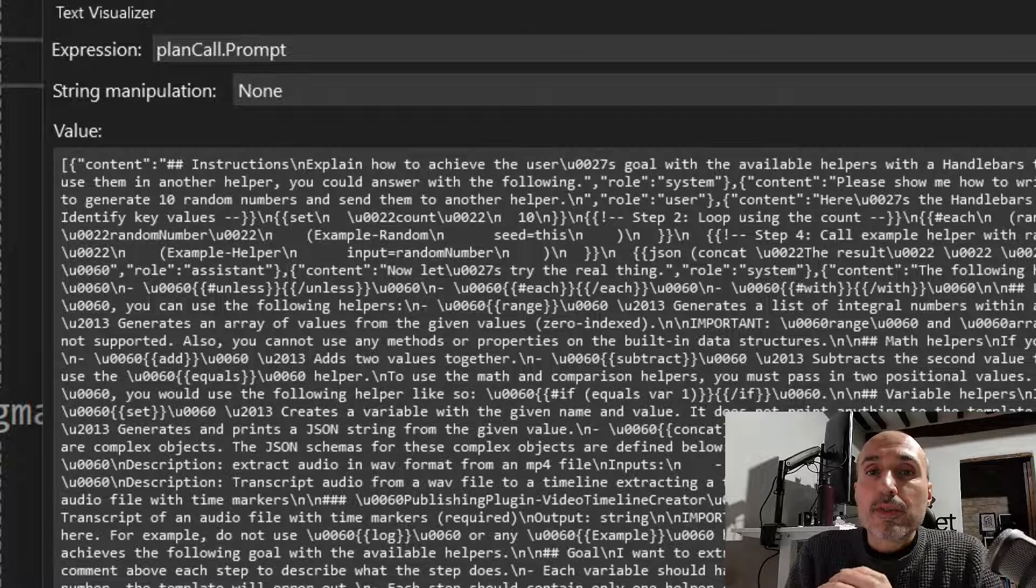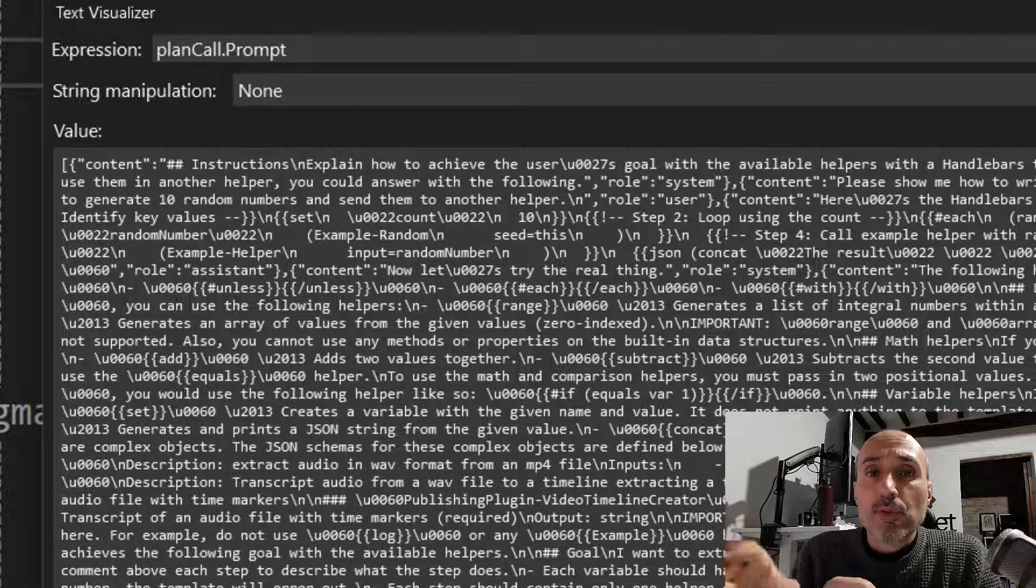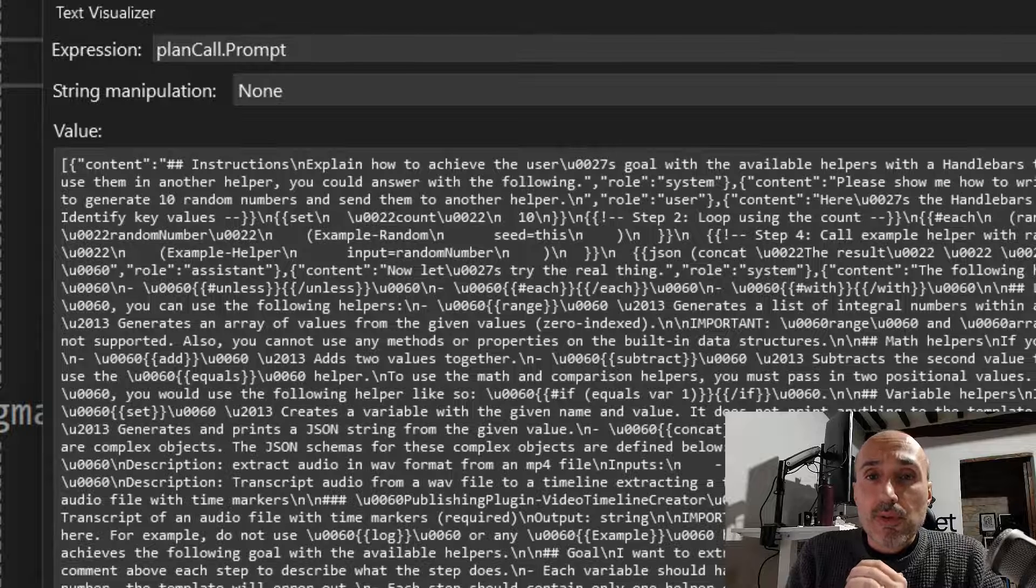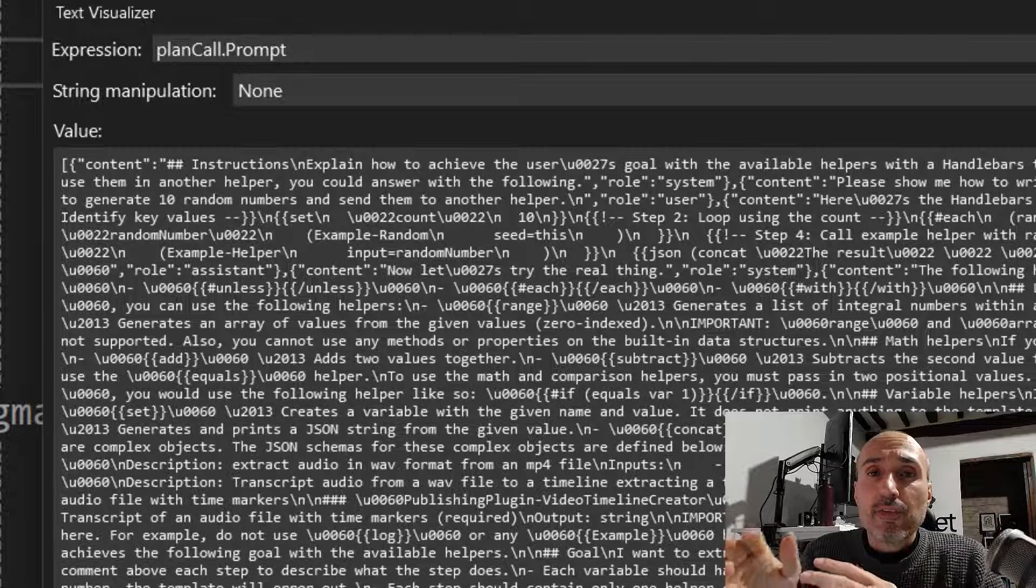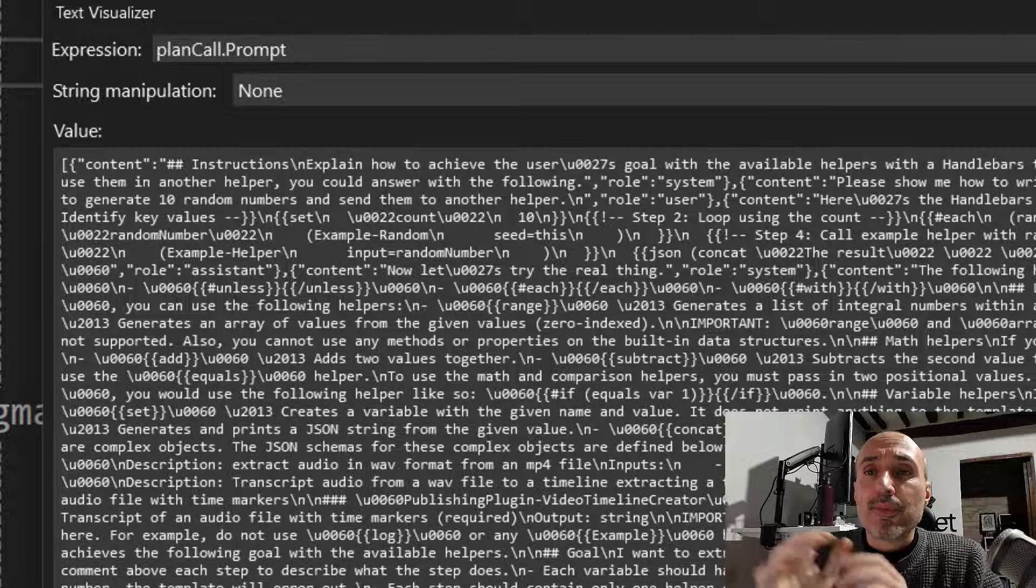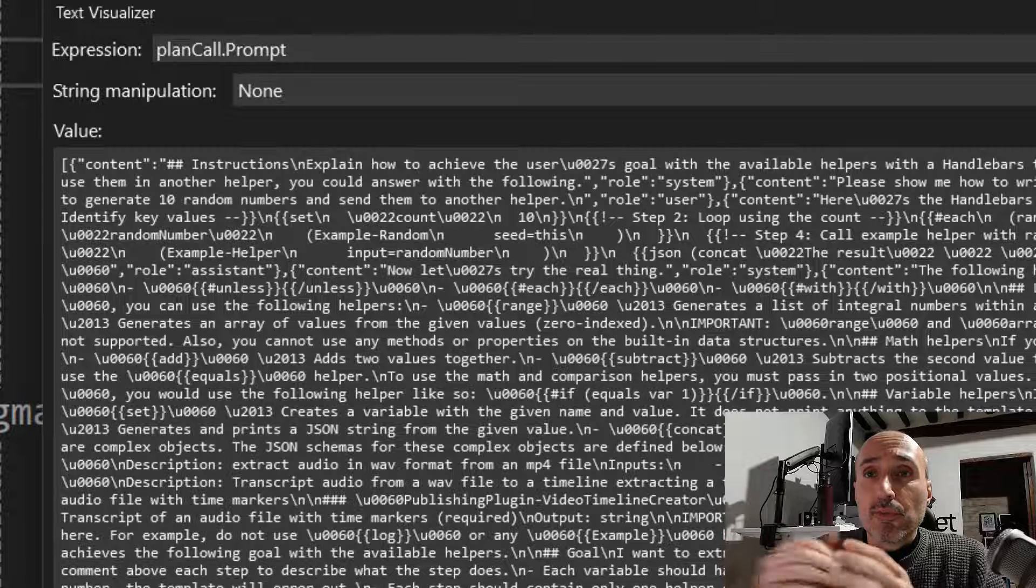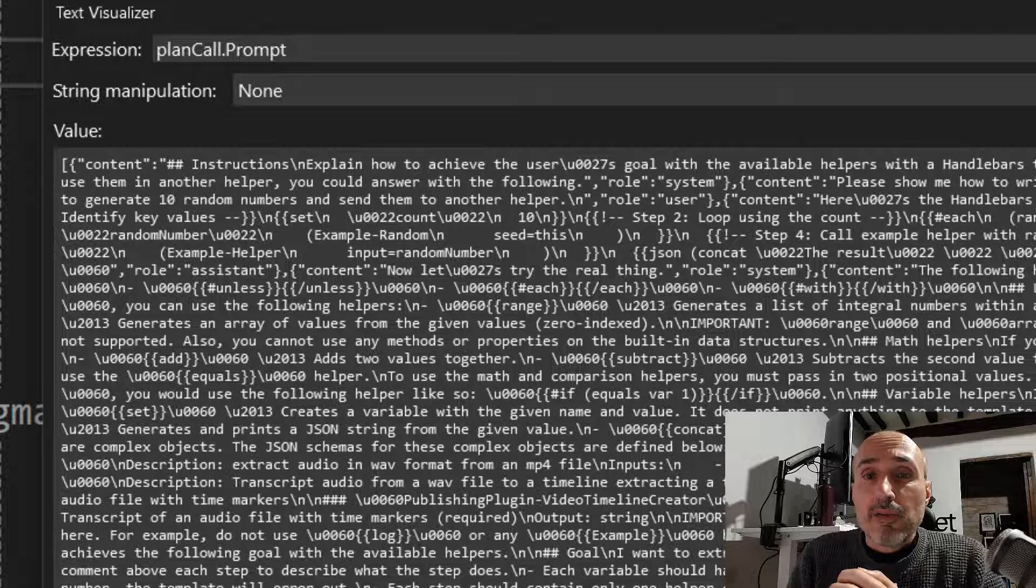Now, if you are curious, thanks to the code that I've written to intercept the large language model call, this is the prompt that it's actually using. Clearly, it is not easy to look at the prompt inside Visual Studio because it has some formatting issues. So it is better to copy, paste into some other editor and make some replacements to have a better idea of what the prompt is.